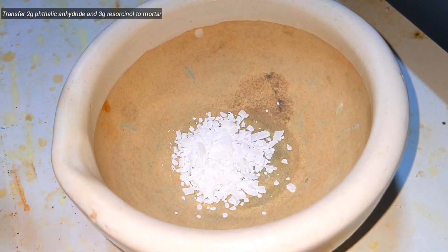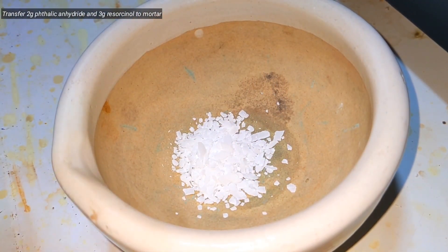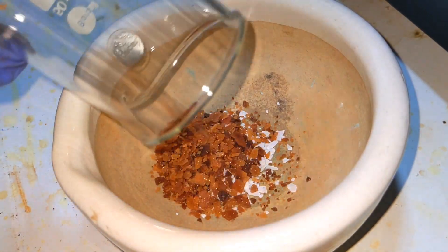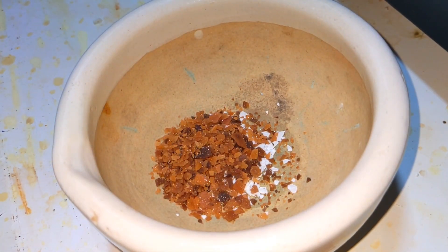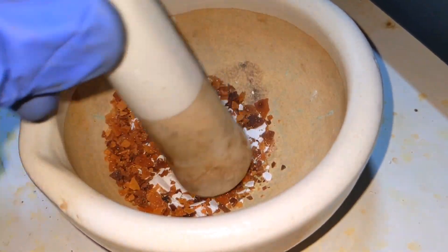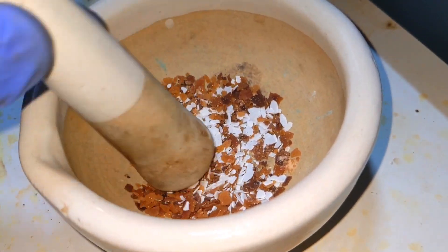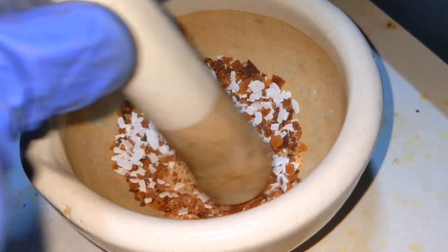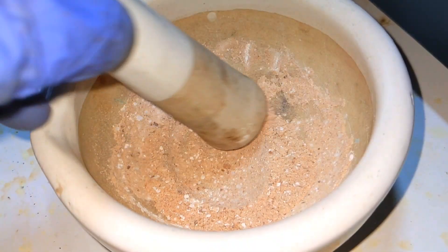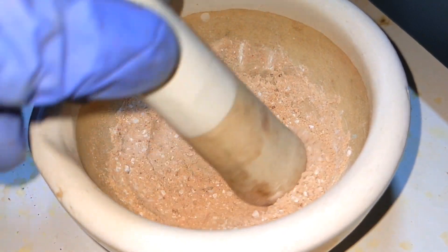We start by taking a mortar and then adding 2 grams of phthalic anhydride and 3 grams of resorcinol into it. With the help of a pestle, grind them together to make a fine powder. This is very necessary as it greatly increases the surface area of both reactants and will give us much more yield.